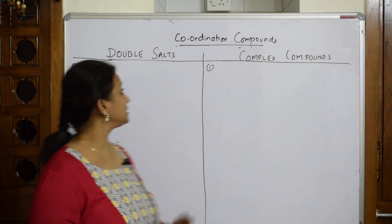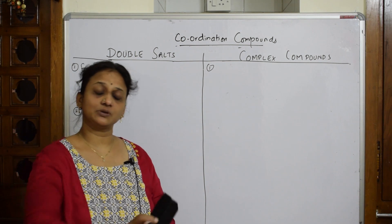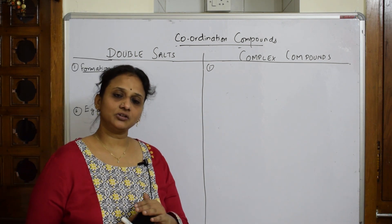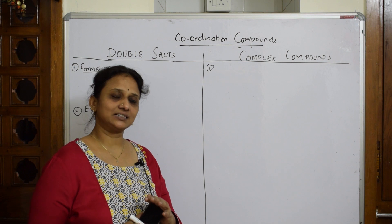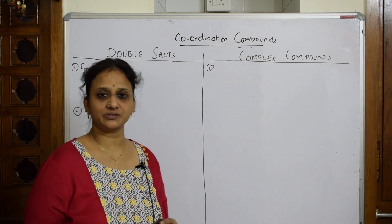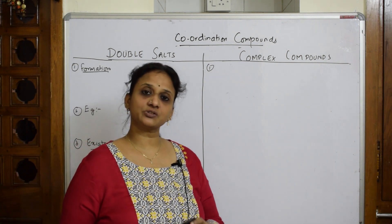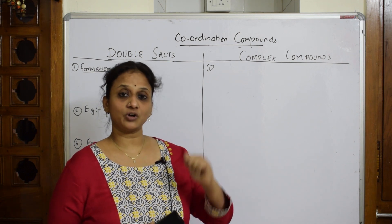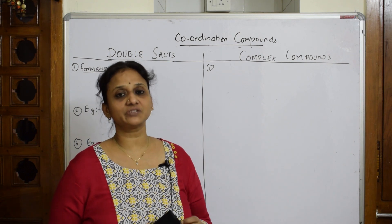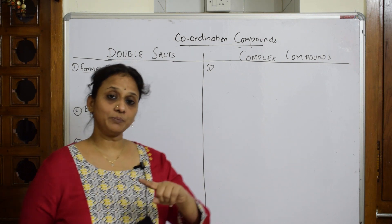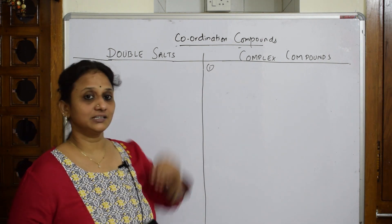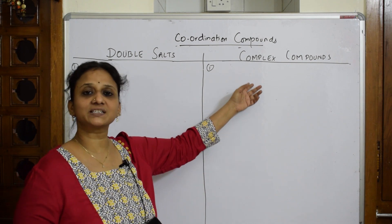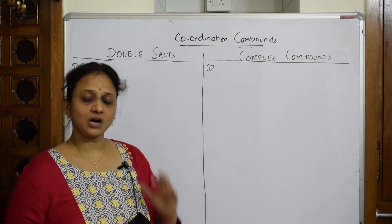The first important topic of the chapter is the differences between double salts and complex compounds — very important. We study this because transition elements, due to their variable oxidation state, form complex or coordinate compounds. We observe that complex formation results in a complex compound or complex ion.